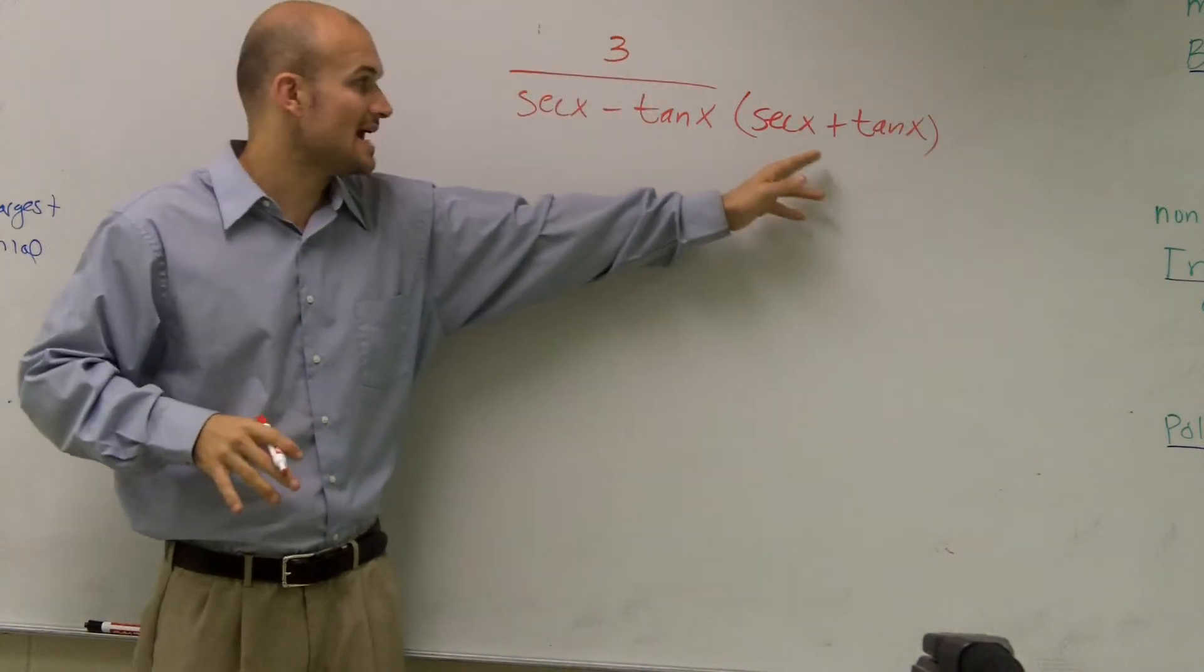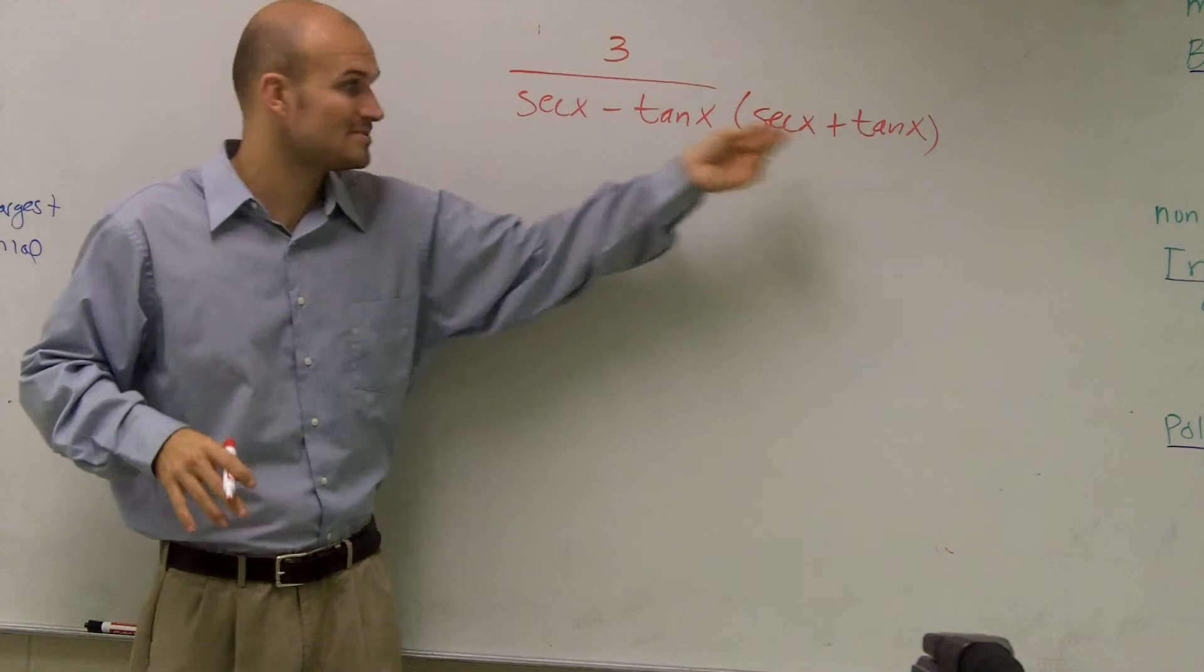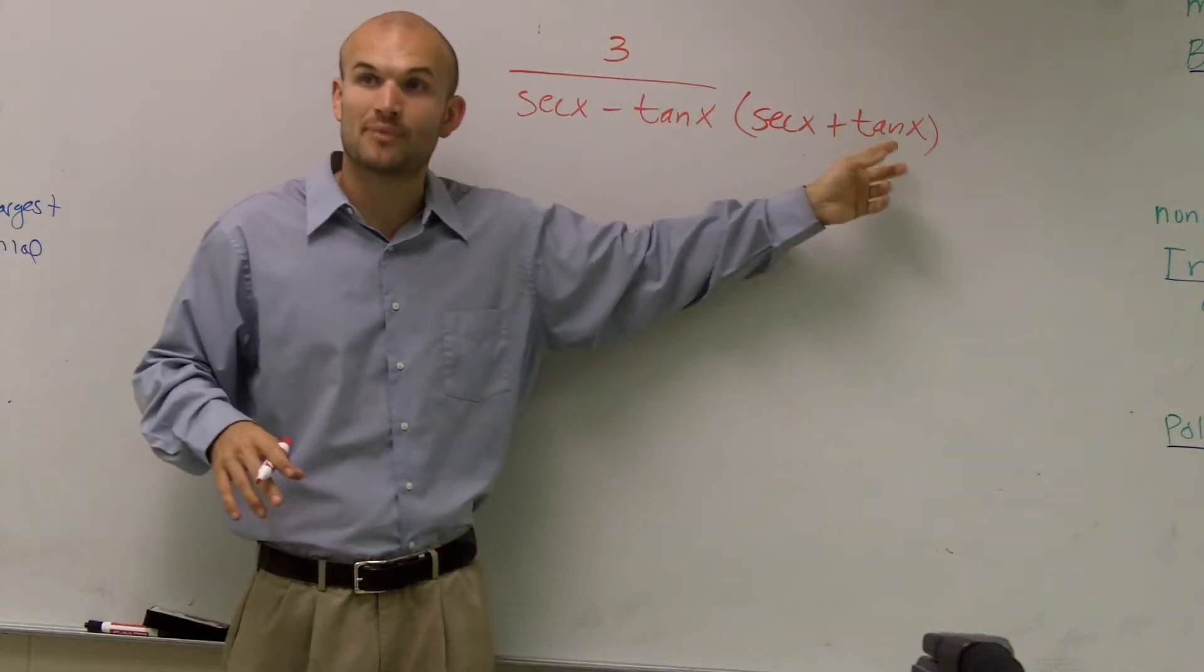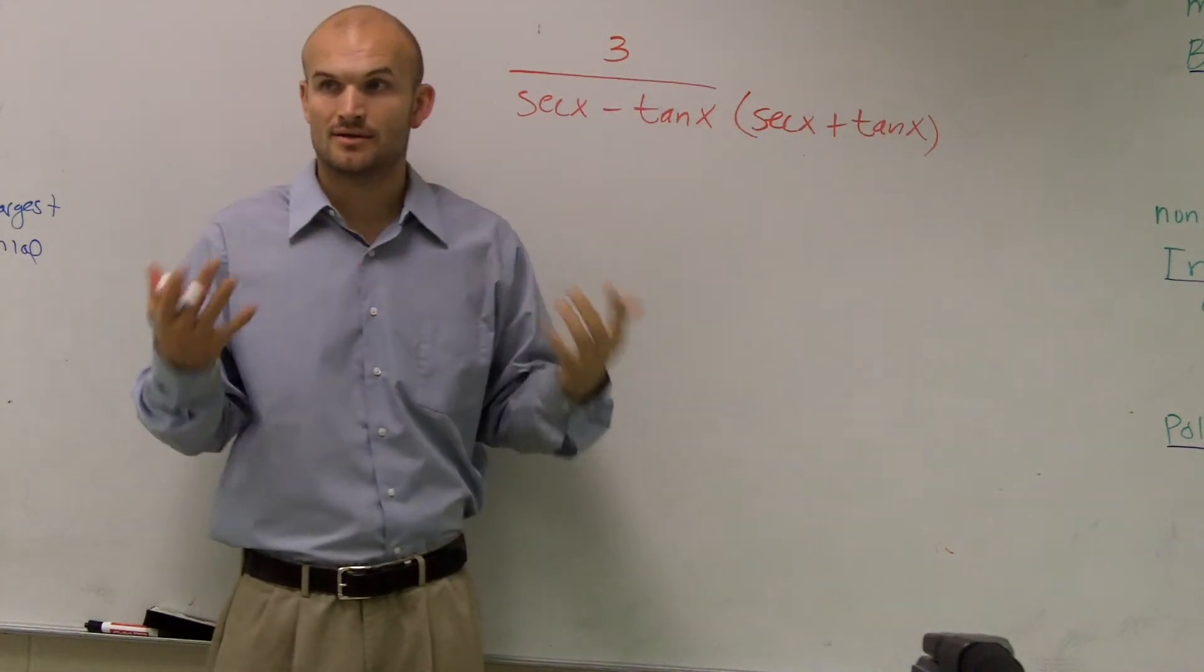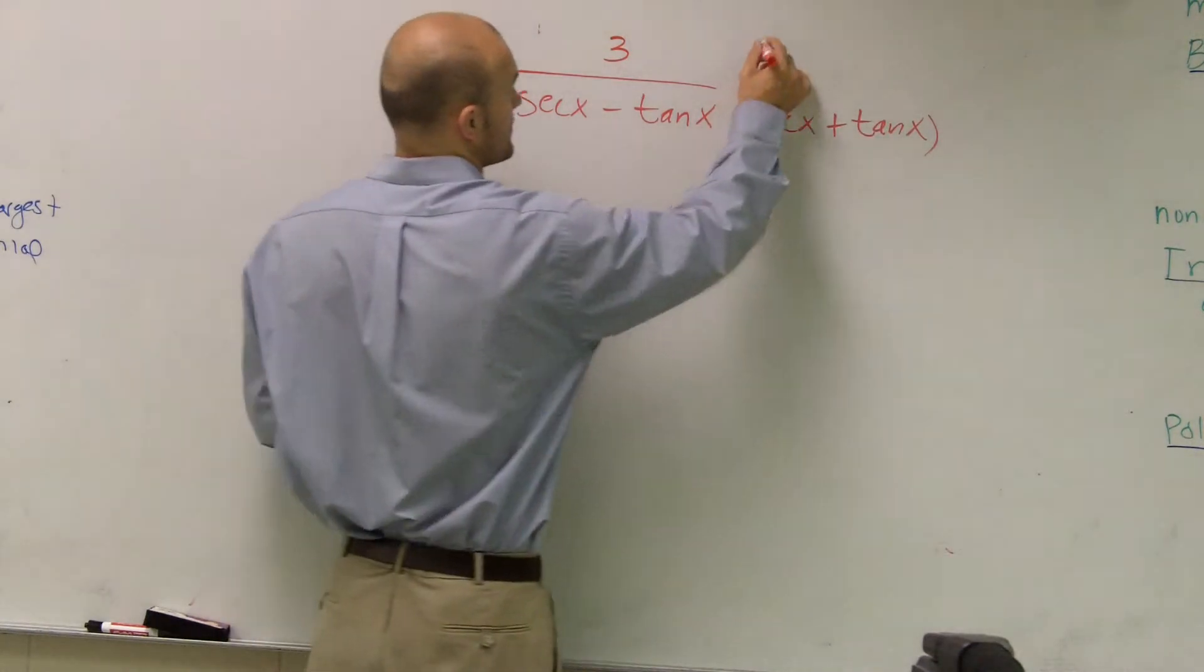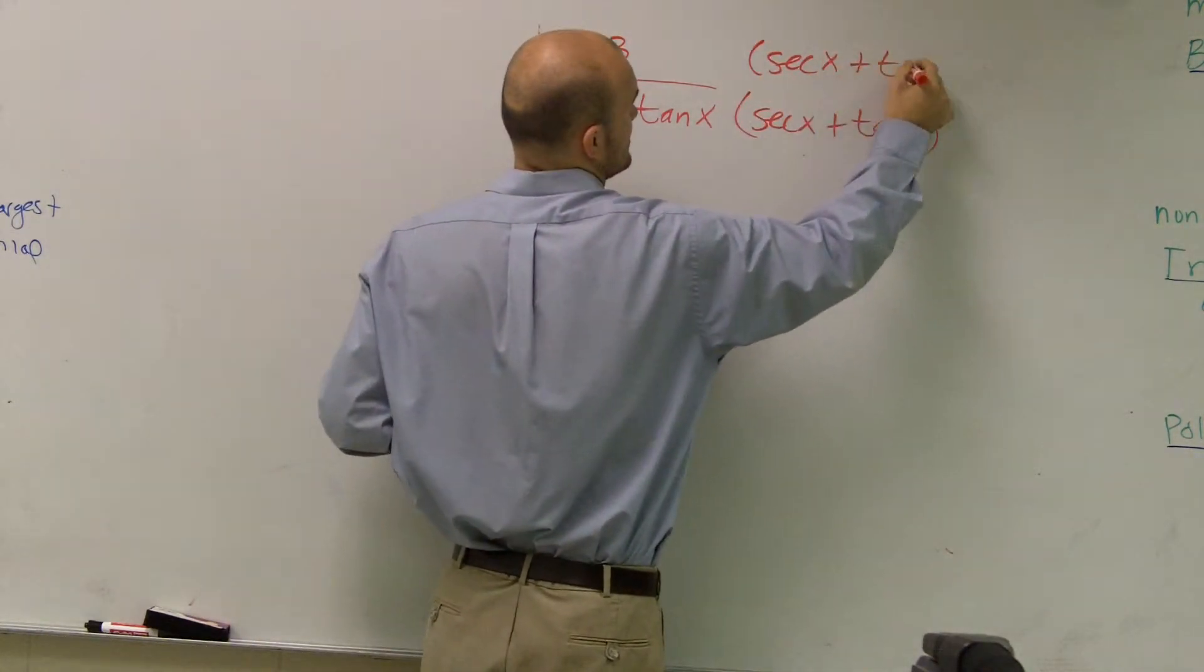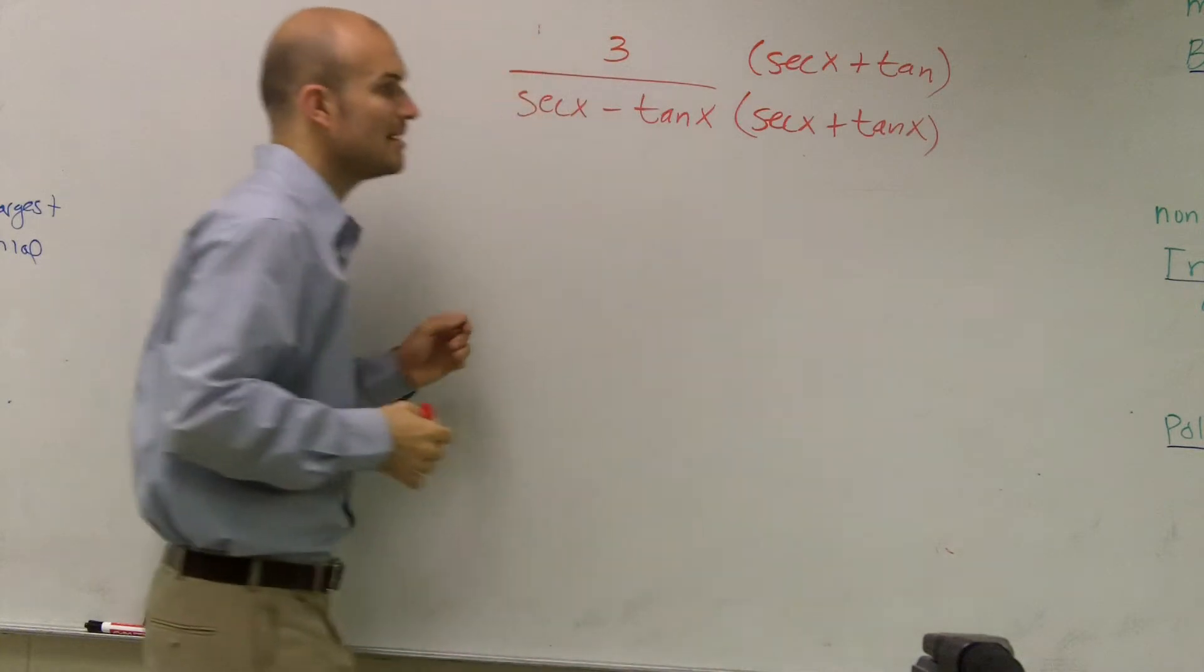Okay, the reason why I'm going to make the plus, because now look, I have the same front two terms, the same last two terms, and I have a plus and a minus, which is our difference of two squares. Secx plus tanx, got to make sure you multiply the top and bottom.